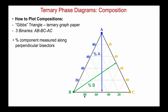Looking at the percentages in green: 80% B, 60% B, 40%, and so on. For C, here's our perpendicular bisector — pure C in the lower right corner, 0% C on the opposite side — and working away in this perpendicular direction: 80%, 60%, 40%, etc.